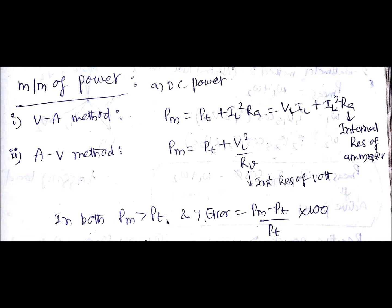In both cases, the measured power will be greater than true power. The percentage error is PM minus PT divided by PT times 100. The error is with respect to true power.